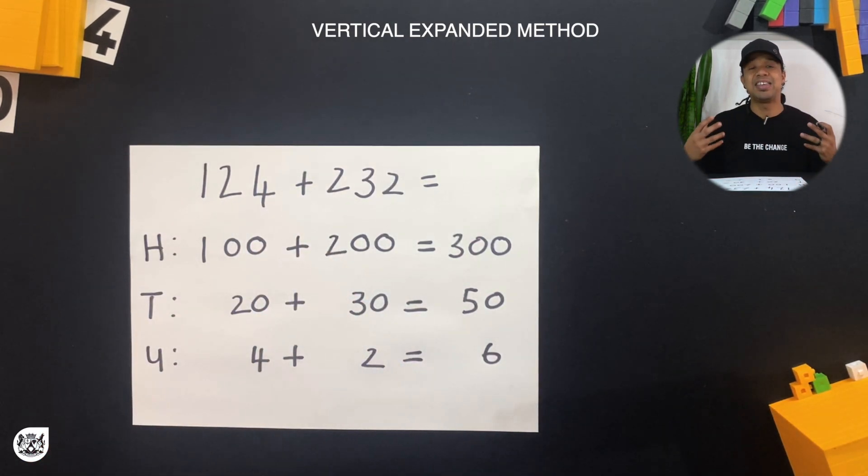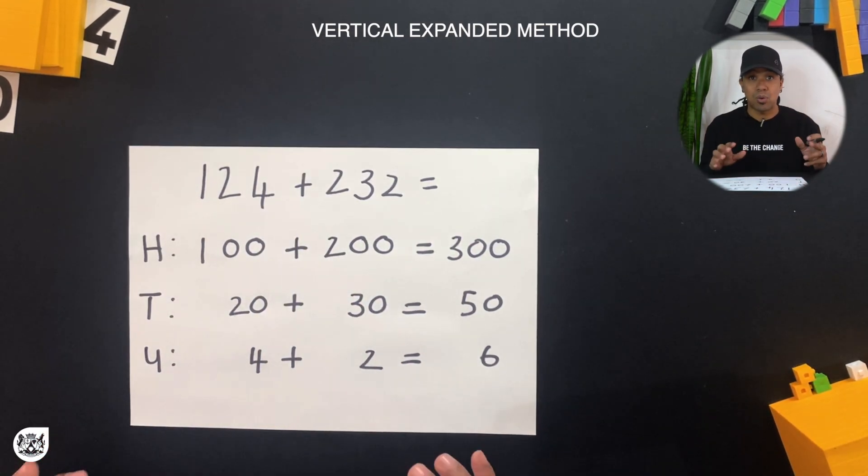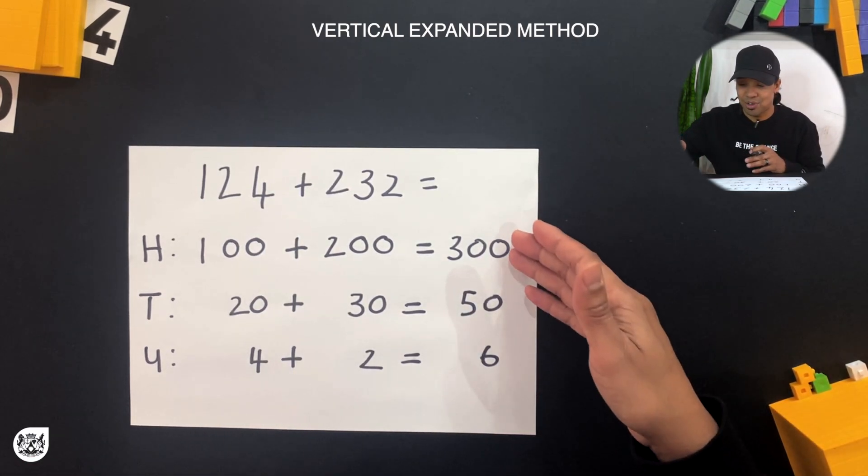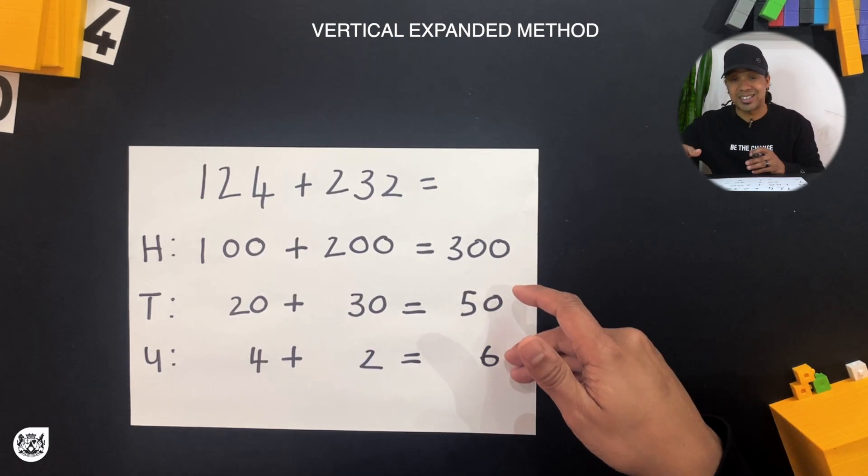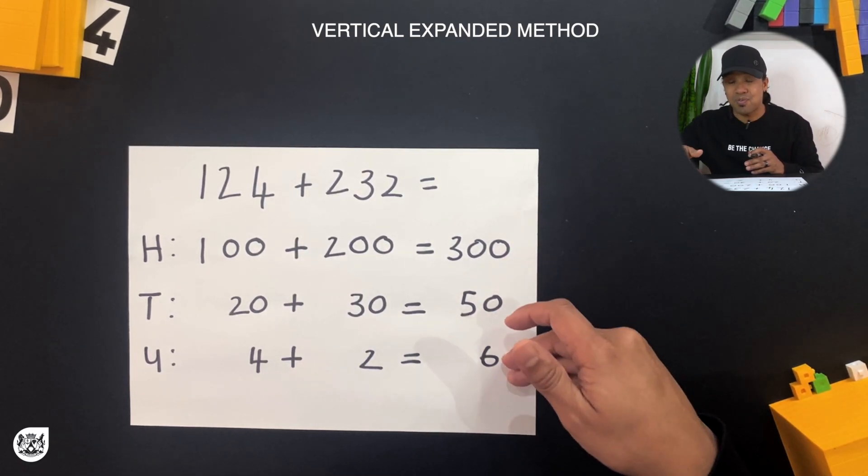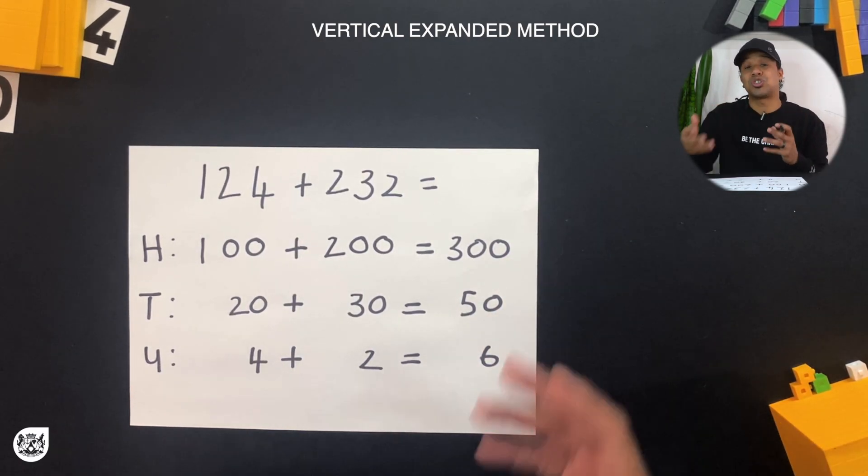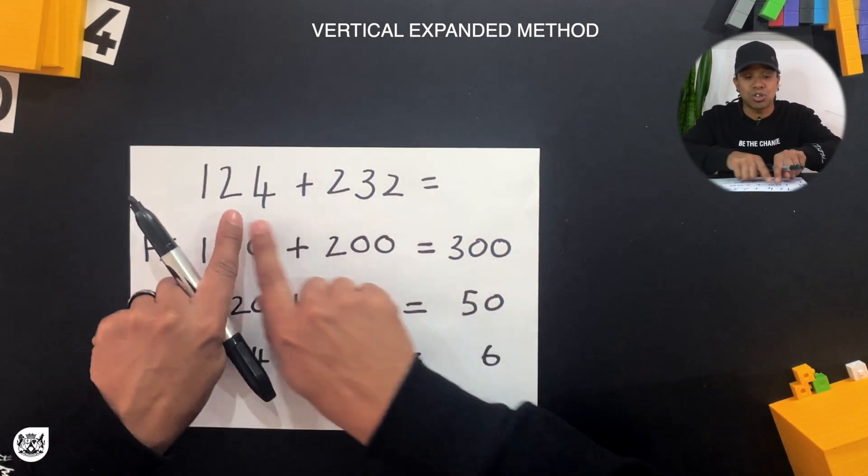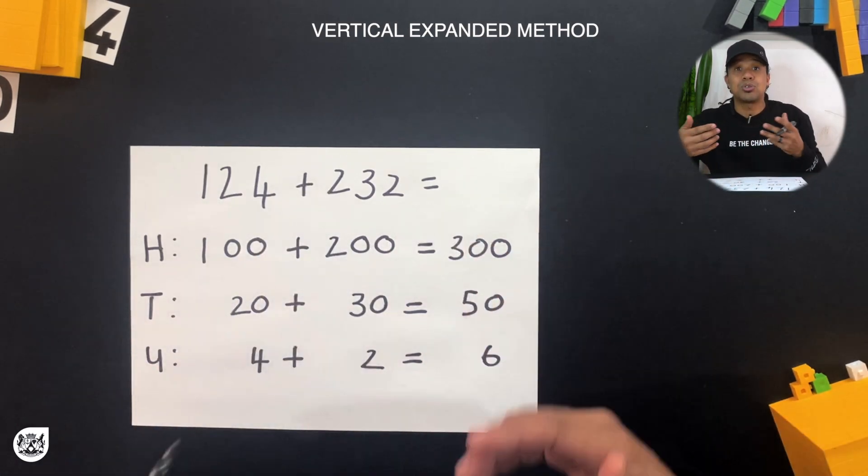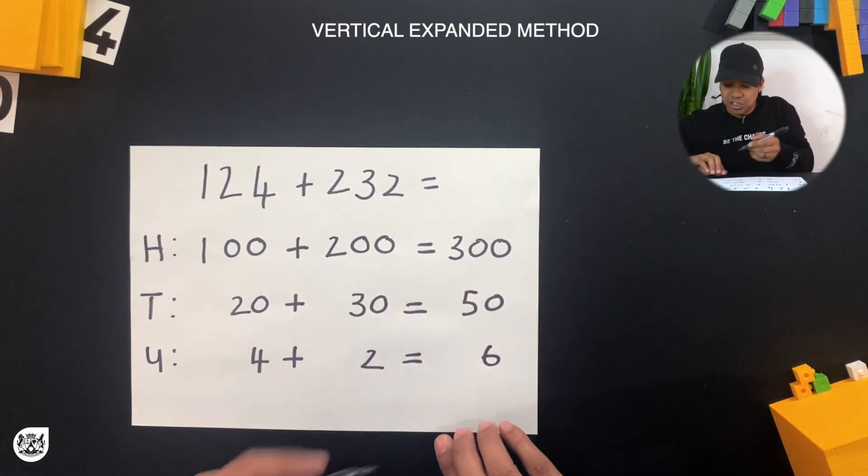Can you see that it's vertically, our numbers have been vertically written down, but it's been expanded into its place values. Now let's look at the answers we got. We've got 300 and 50 and 6, but this isn't our final answer or it's not in the final form we wanted in the form that our question was given.